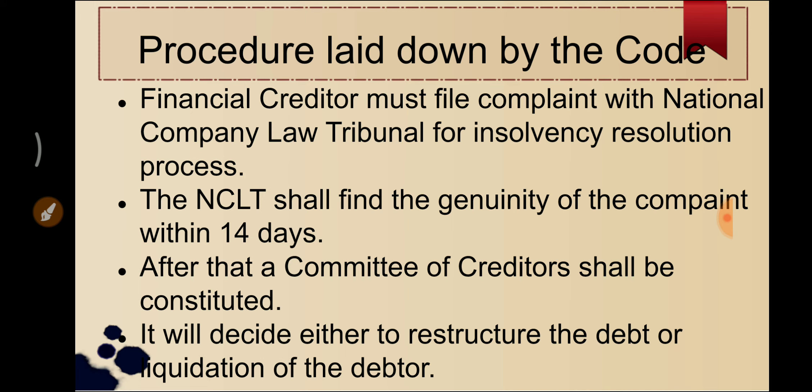The second option is to liquidate the debtor's assets. If the creditors decide to liquidate rather than restructure, then the debtor's assets will be sold off up to the amount of liability. There is a prescribed order under company law for how liquidation is carried out. That order is followed and assets are sold off in that sequence, and the money is used to settle the debt.